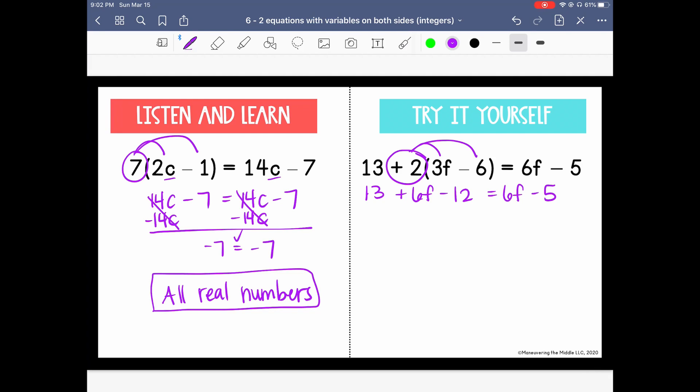Now let's combine our like terms because on the left I have 13 minus 12. So we will combine that, we'll say we have 6f and 13 minus 12 is just 1.